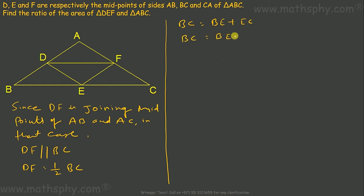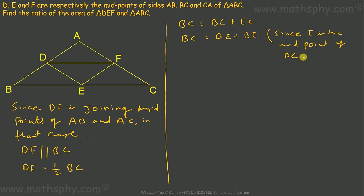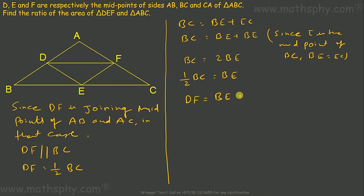Since BC equals BE plus EC, and E is the midpoint of BC, we get BC equals 2·BE. Therefore half of BC equals BE. So DF equals BE, and DF is parallel to BE.